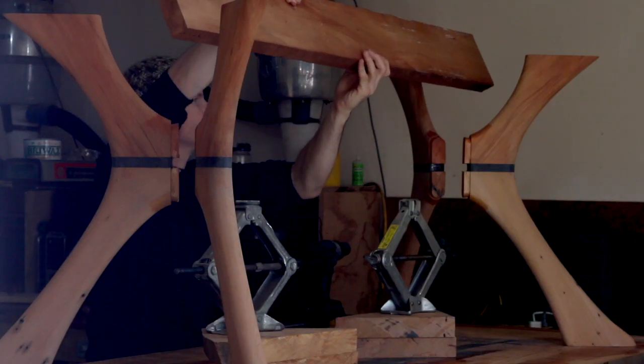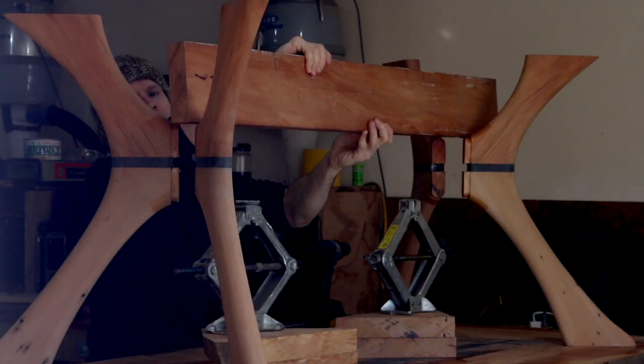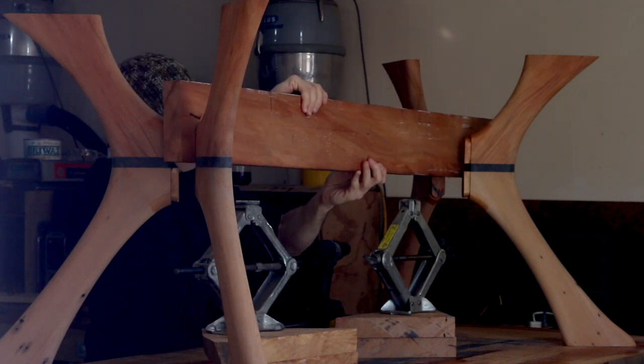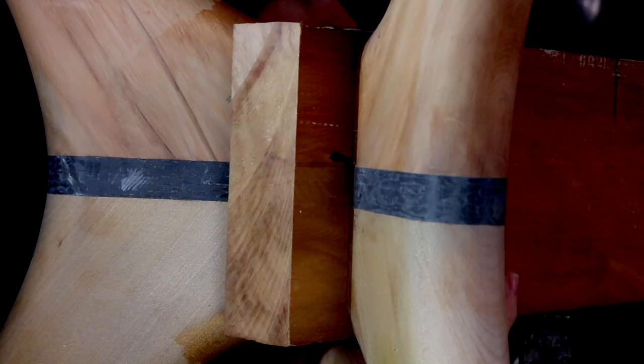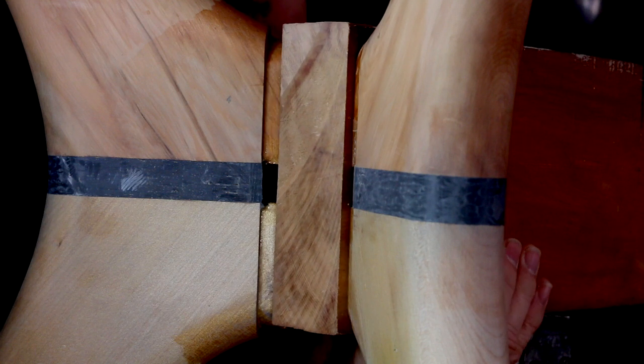Now I could work on the table leg cross member. I found that using car jacks was excellent, because I could hold the cross member at the correct height.